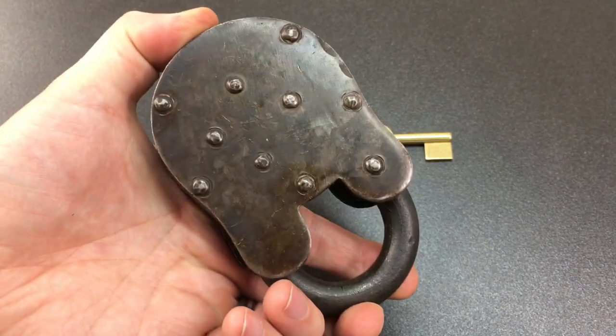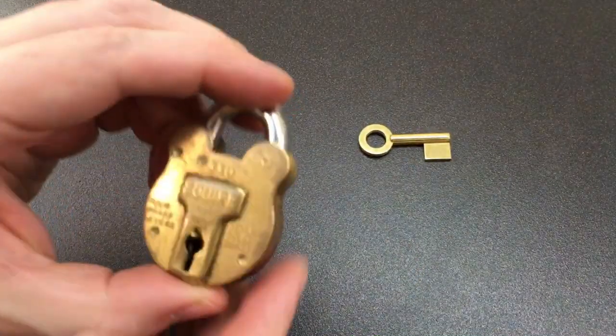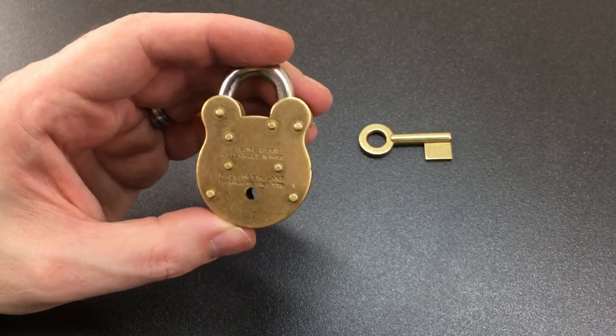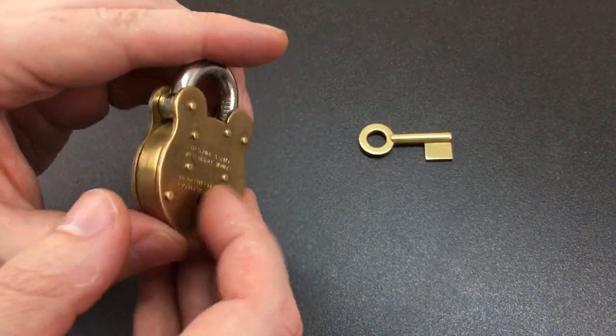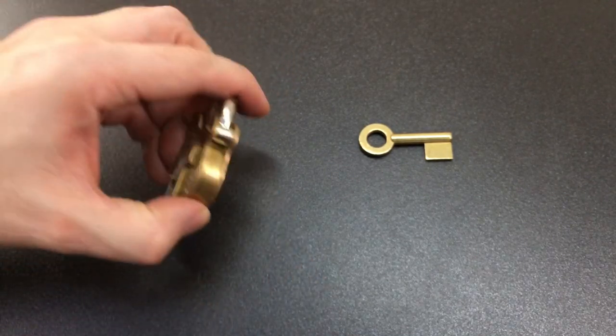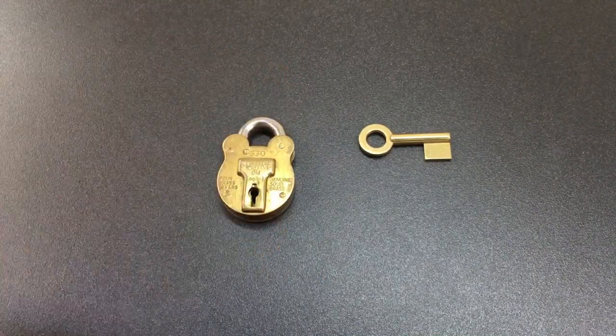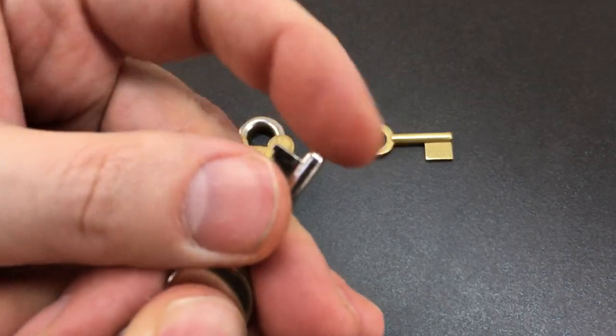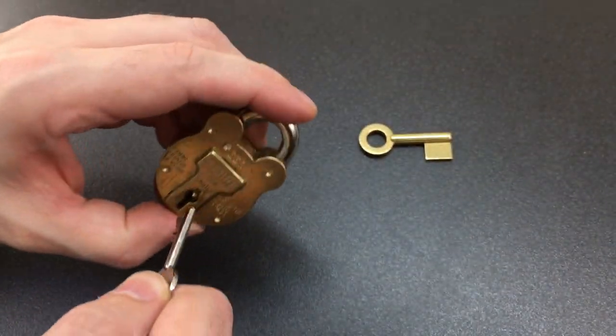That acts as a guide for the key. There's no hole on the back side of the lock. Then there are locks like this with a hole in the back, and that can be a hole all the way through or just a cutout in the back. You can't see anything from the actual back side of the lock.